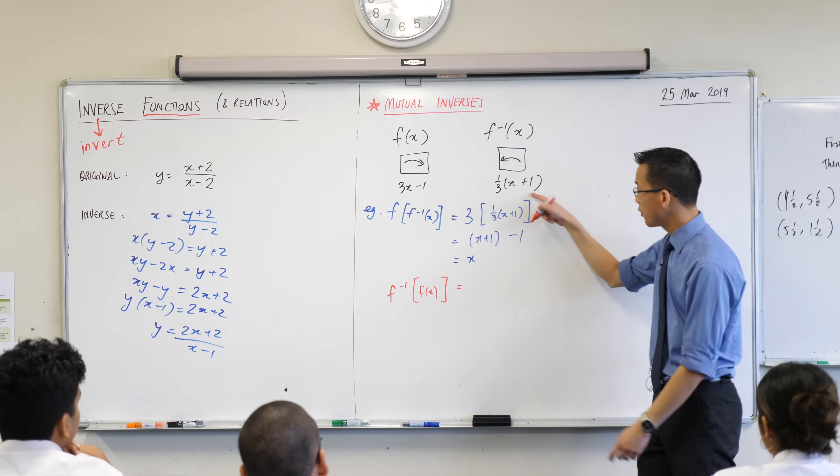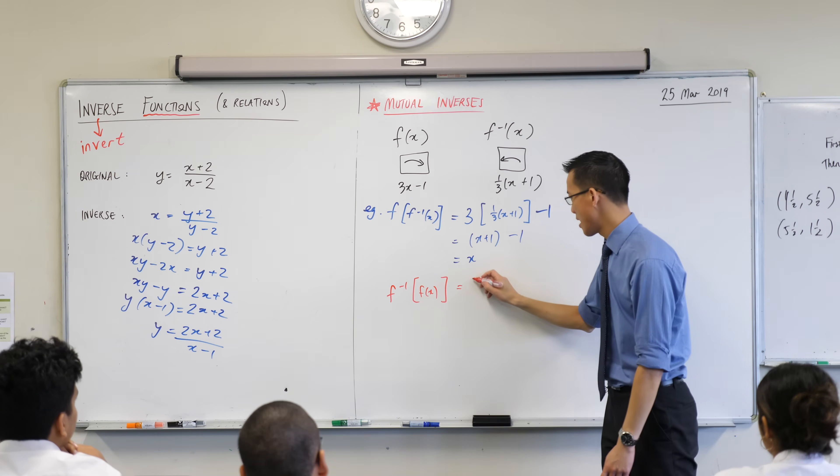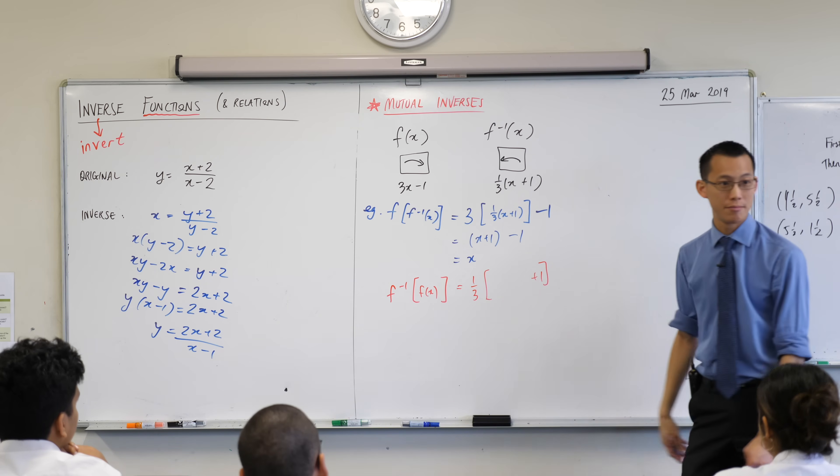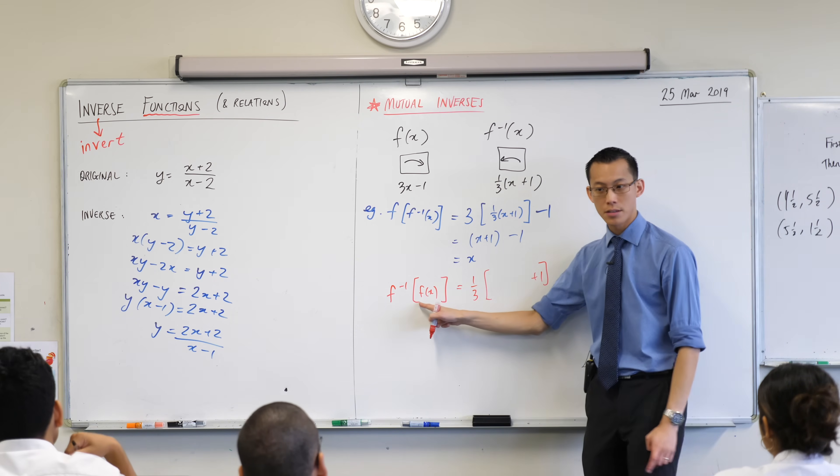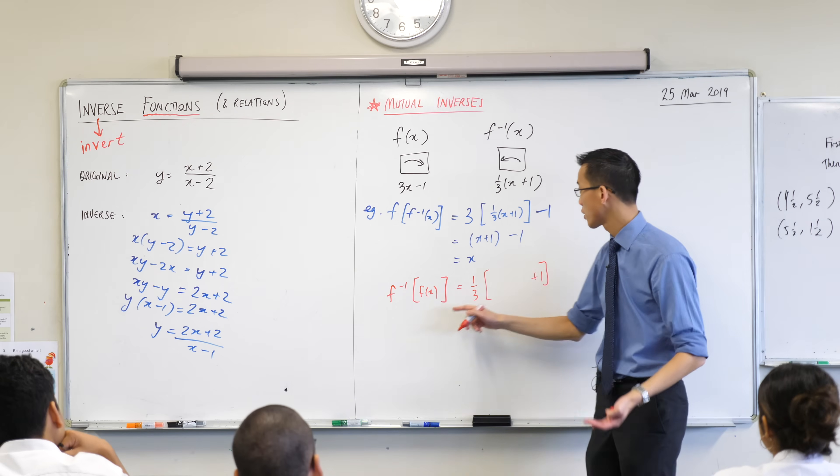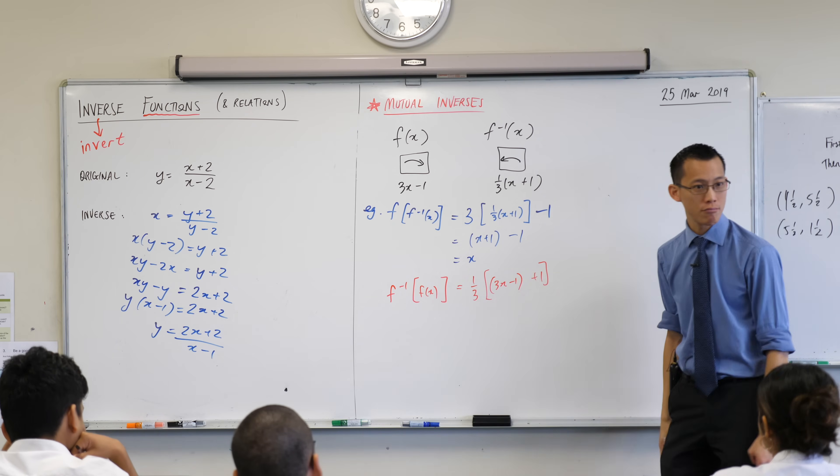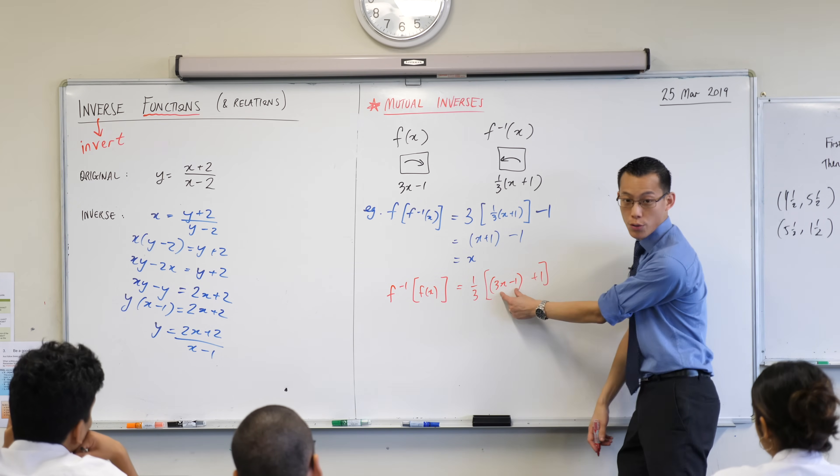Well, let's give it a go. Here is the outside, the inverse function. A third of something plus one, but the something that I'm going to put in is the original function, which is there. Three x minus one, like so. So you can see there is the original function sitting inside, and just like before,